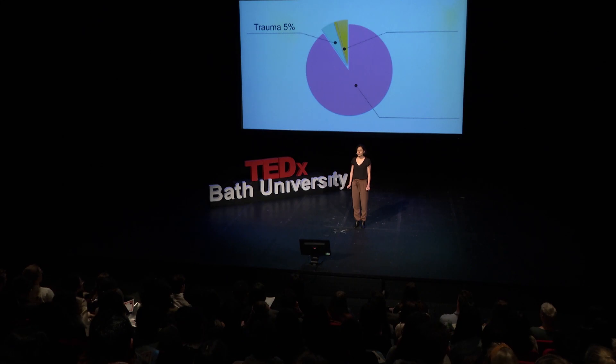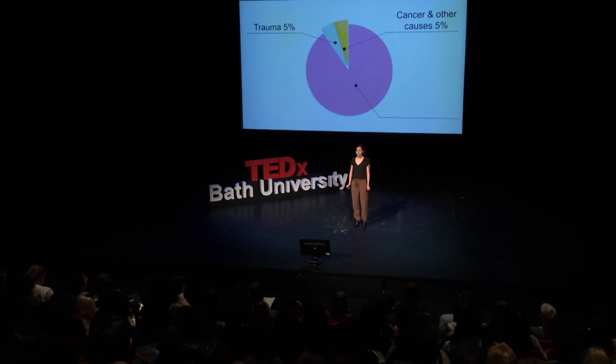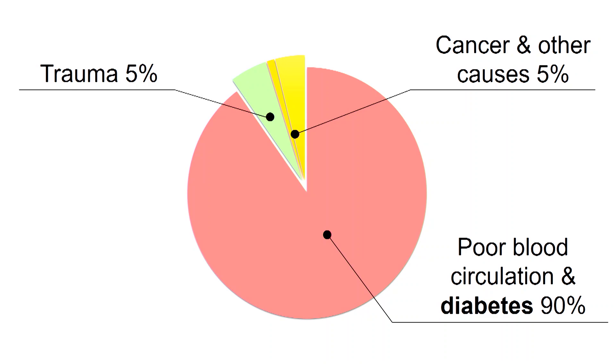The first cause is trauma — accidents and war. Are you surprised? We also have other causes like cancer. But the big cause of amputation is poor blood circulation and diabetes.